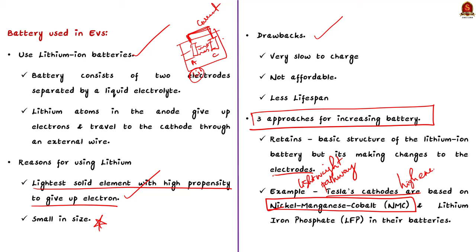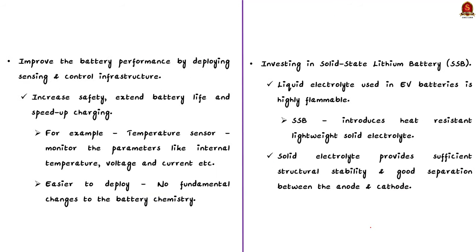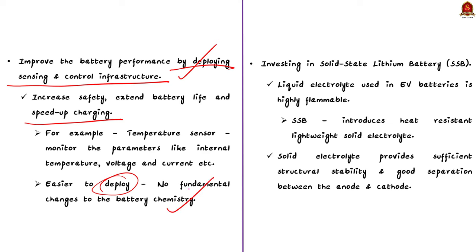The second approach is to improve battery performance by deploying sensing and control infrastructure. This will increase safety, extend battery life, and improve charging speed. For example, temperature sensors can be installed to monitor parameters like internal temperature, voltage, and current. This process uses advances in battery management and charging algorithms and is generally easier to deploy since it does not involve any fundamental changes to the battery chemistry. The third approach is to invest in solid-state lithium batteries (SSB).